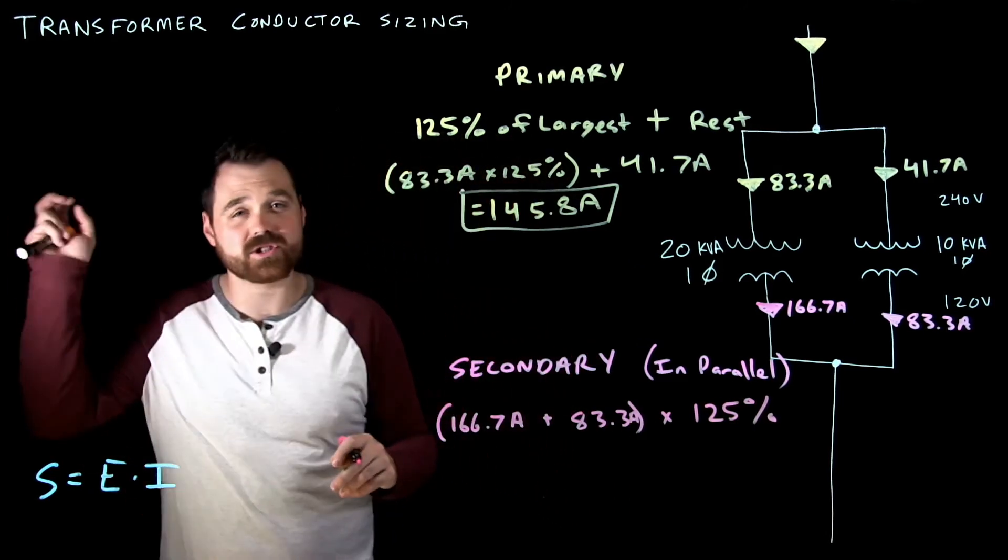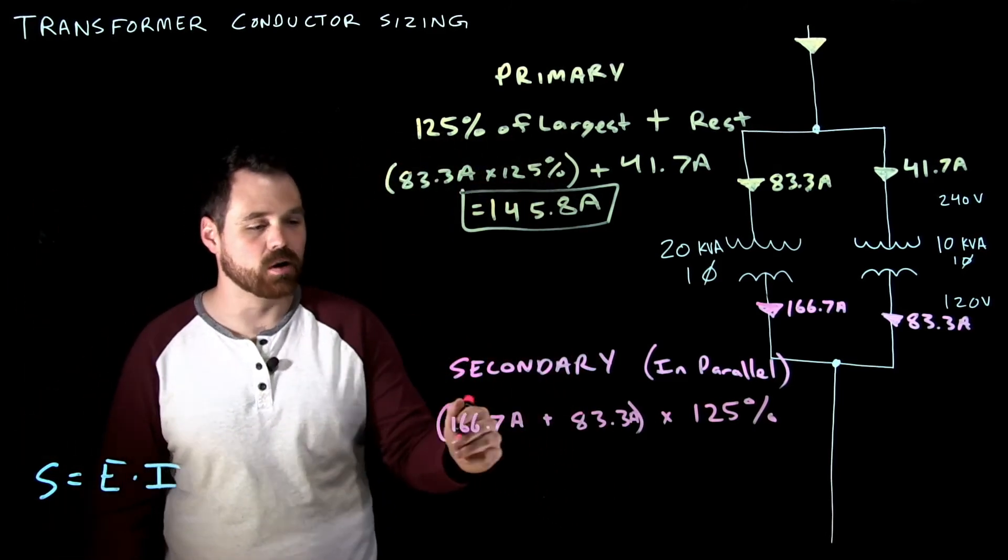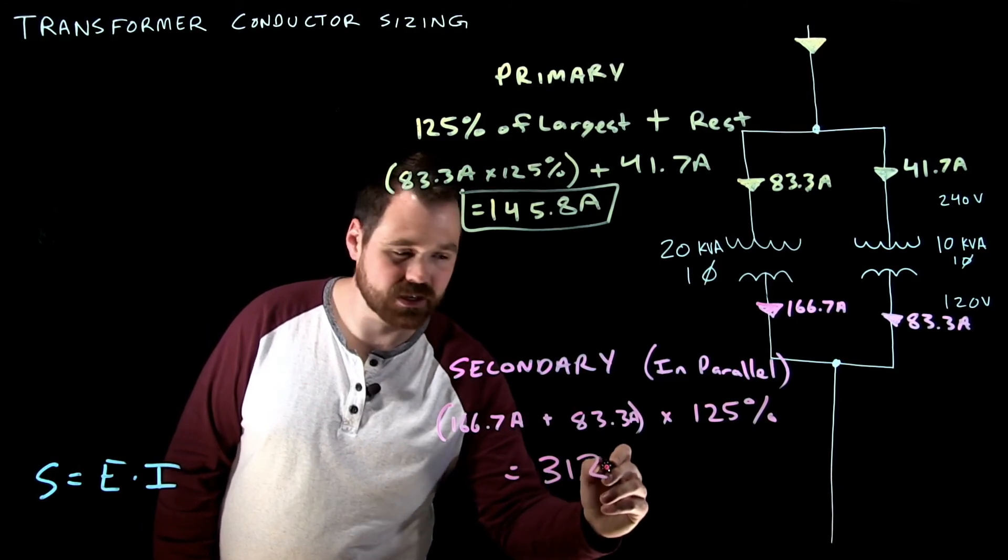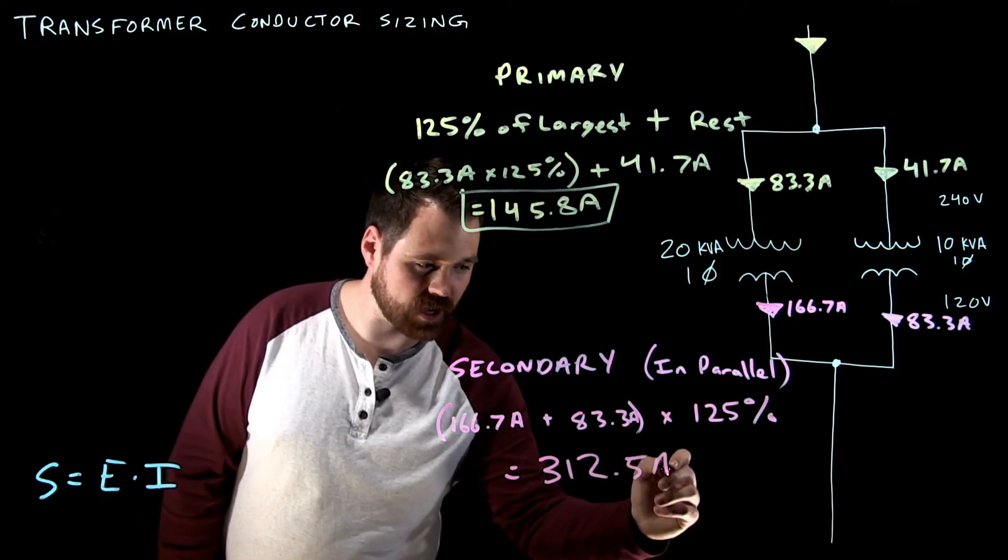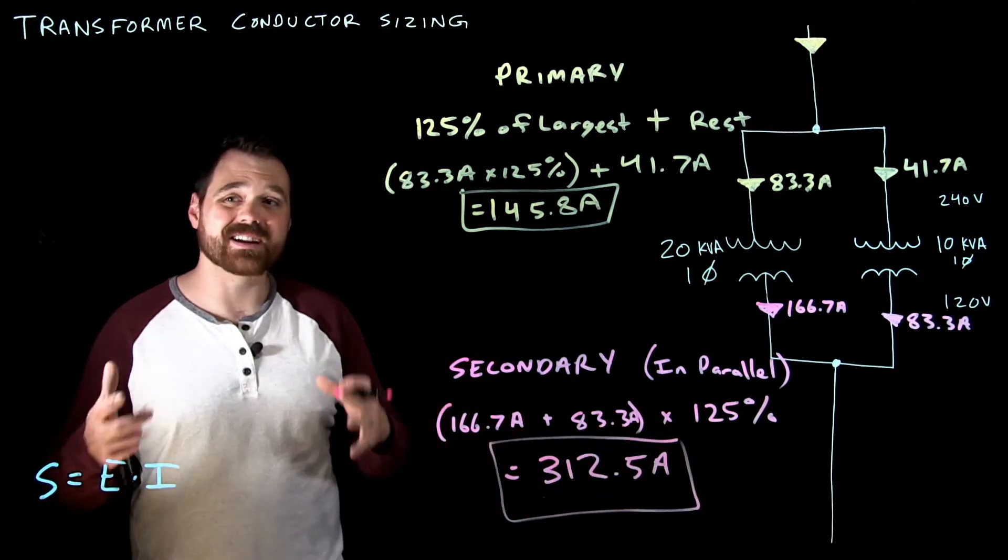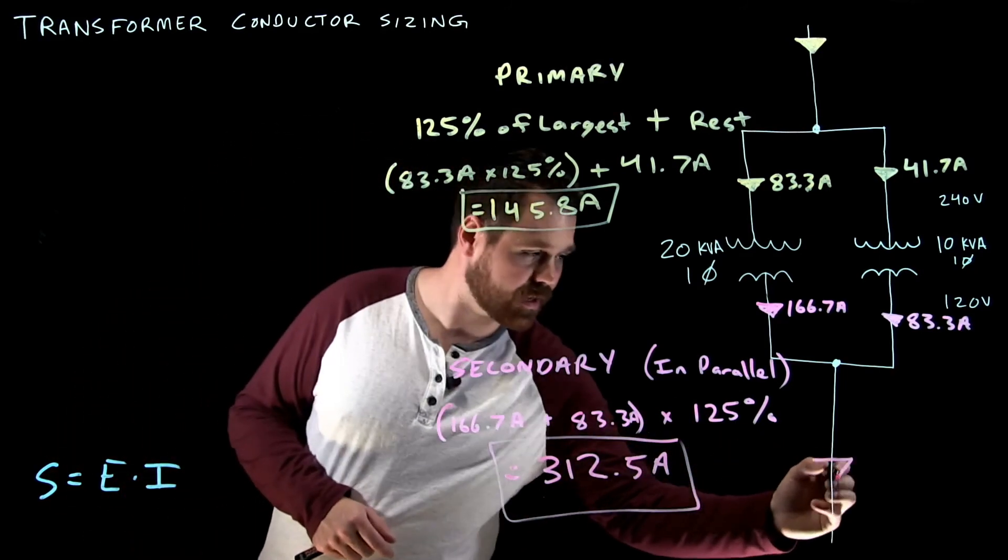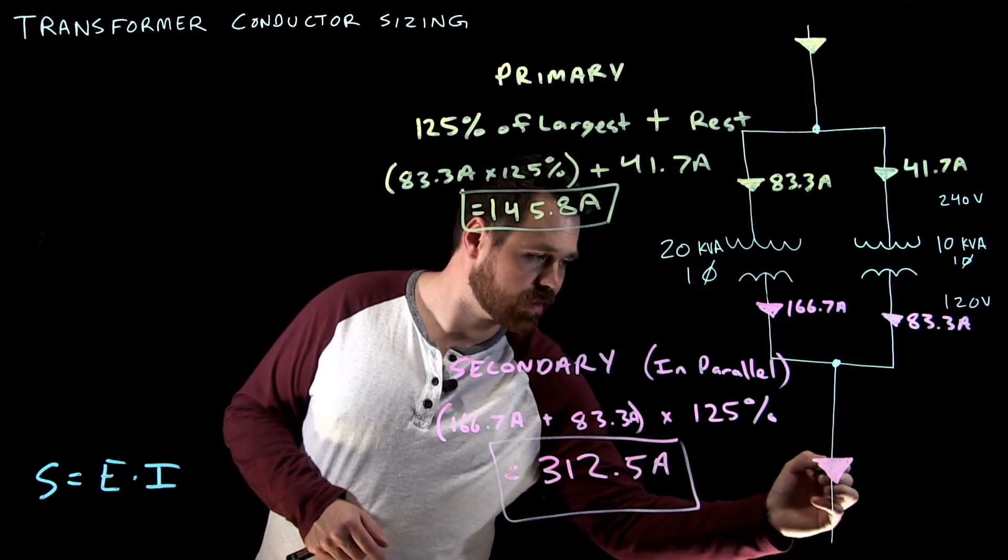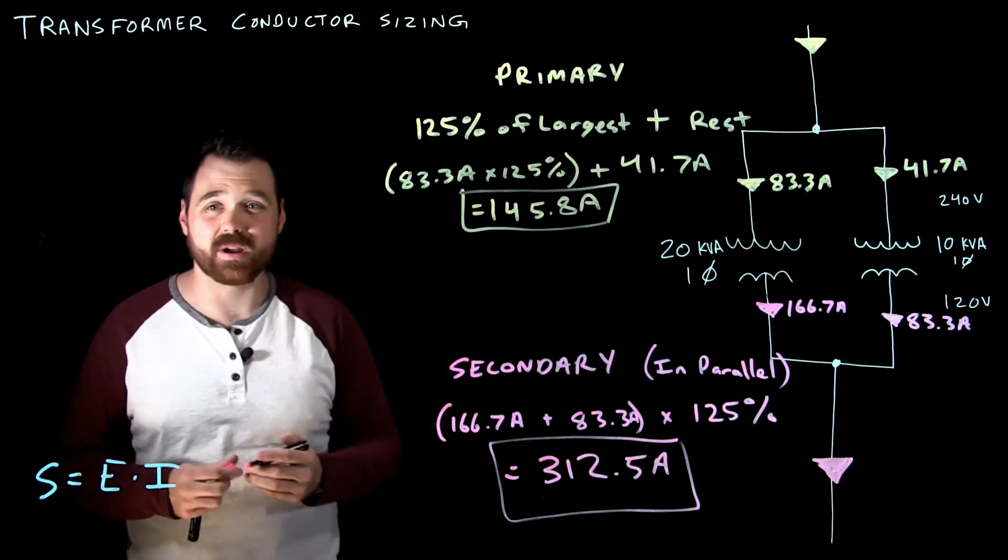And again, you can check out the rules I'm referencing down below. But that gives me a required minimum capacity of 312.5 amps. This number right here is how much current that conductor right here, my paralleled secondary needs to be able to carry.